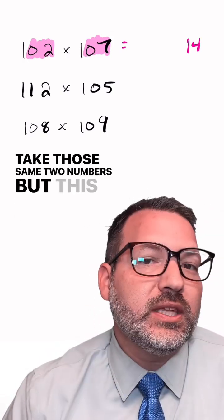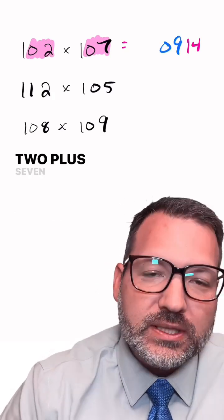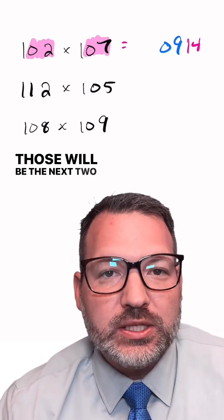Take those same two numbers, but this time add them together. Two plus seven is nine. Those will be the next two digits of our product.